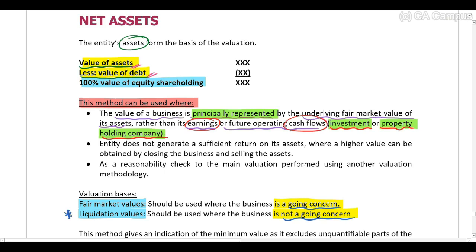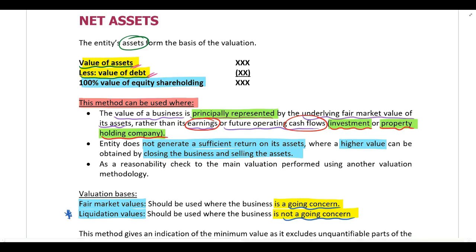The reason for this is that the value of the company is determined by the assets they hold, not necessarily the future income or future cash flows the company will generate. This could also mean the company doesn't generate a sufficient return on their assets, and they would obtain a higher value if they closed the business and sold the assets. The assets are worth more than the future earnings or cash flows from operating, and in that case we should value the company using the net asset value method instead of an earnings multiple or the free cash flow method.